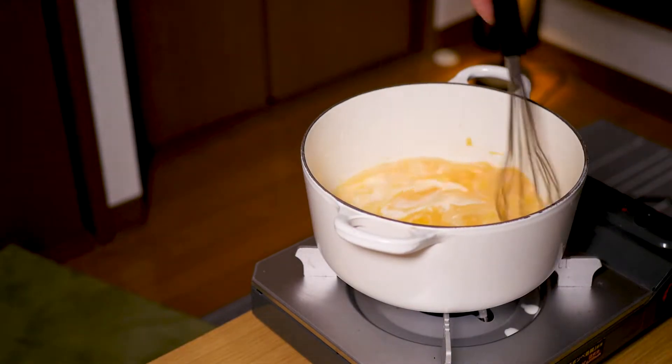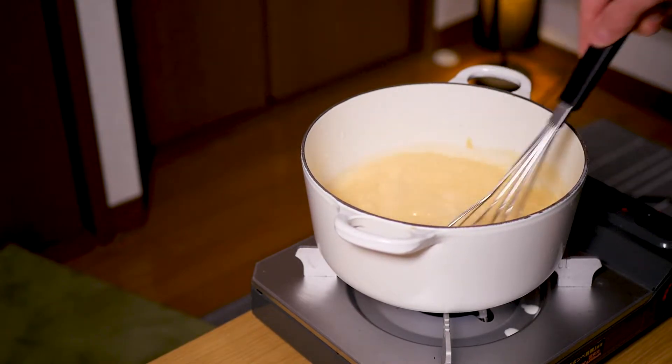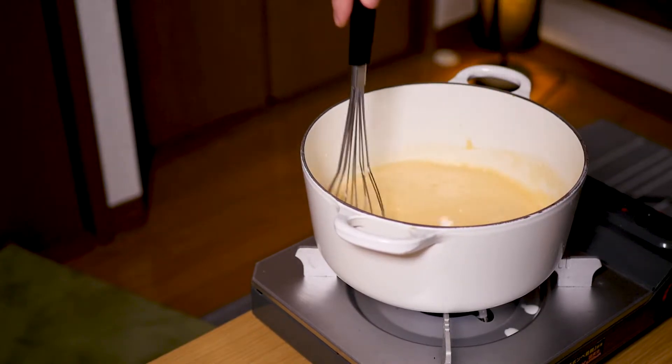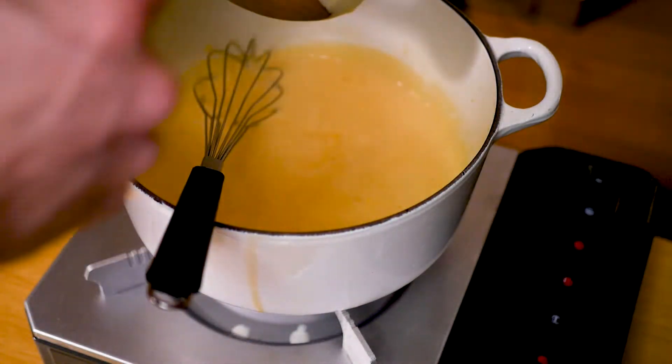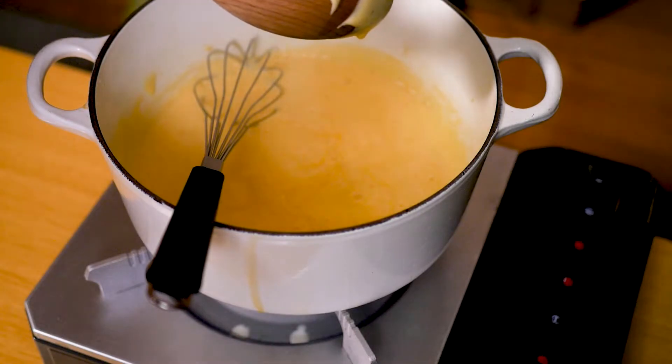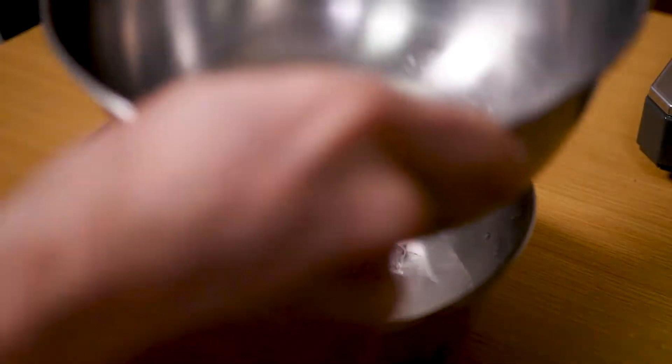Add the custard mix back into the saucepan and start whisking. Turn the heat on to a very low heat and whisk constantly to make sure it doesn't clump. Heat slowly and keep it moving until it starts to thicken. What you're looking for is for that custard to coat the back of a wooden spoon and when you run your finger through it makes a clear line and holds to the spoon. Now it's ready.